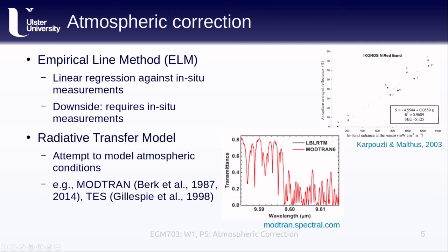There's also the temperature and emissivity separation algorithm described in this paper, which is linked at the end of the presentation. The main output of radiative transfer models is usually the atmospheric transmittance. The other components of the radiative transfer equation that we showed on the previous slide can be estimated from the atmospheric temperature at different heights.